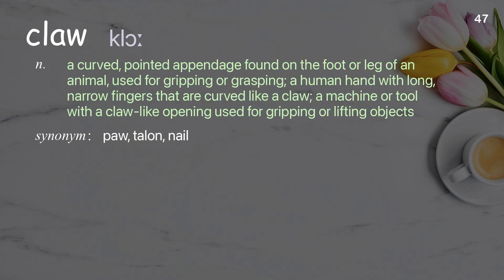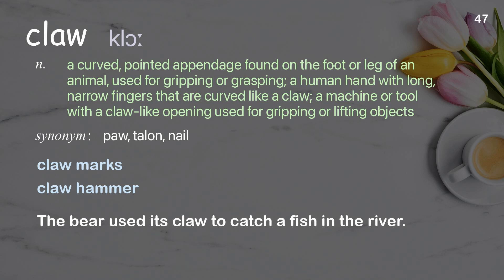Claw: a curved, pointed appendage found on the foot or leg of an animal, used for gripping or grasping; or a machine or tool with a claw-like opening used for gripping or lifting objects. Examples: claw marks; claw hammer. The bear used its claw to catch a fish in the river.